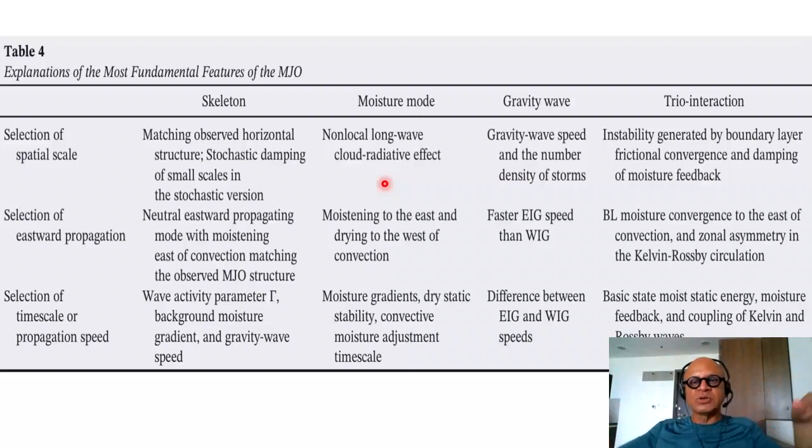In the gravity wave case, gravity wave speed and number density of storms selects the spatial scales. In the trio interaction, instability generated by the boundary layer frictional convergence and damping of moisture feedback. So this is very insistent on this boundary layer frictional convergence instability.